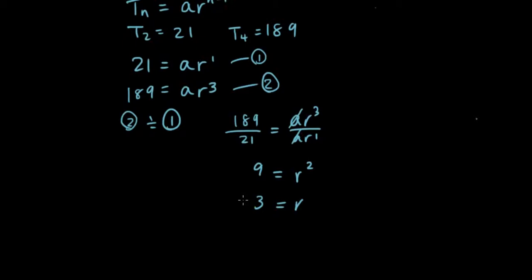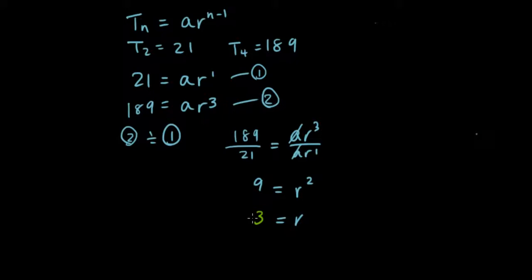And we don't have to worry about negative 3, because you'll see that it's not going to work after you substitute the numbers in. So A times R is 21. If R is 3, then A is 21 divided by 3, which is 7.